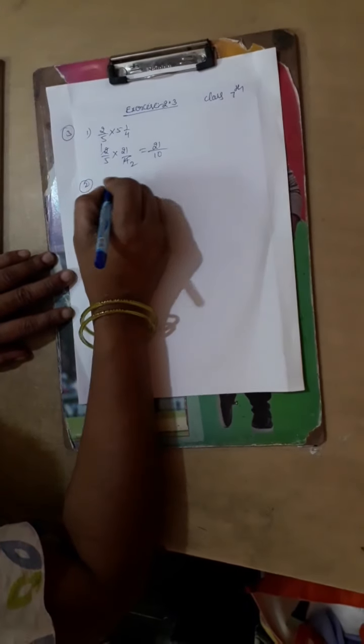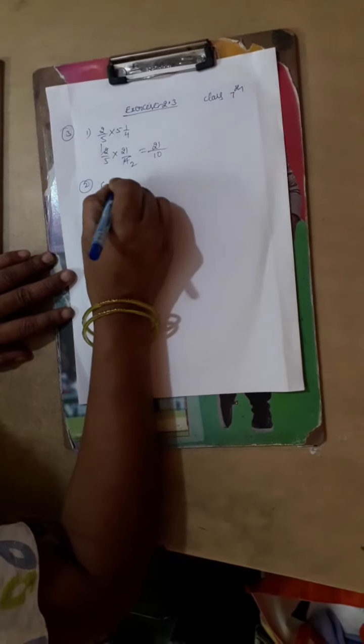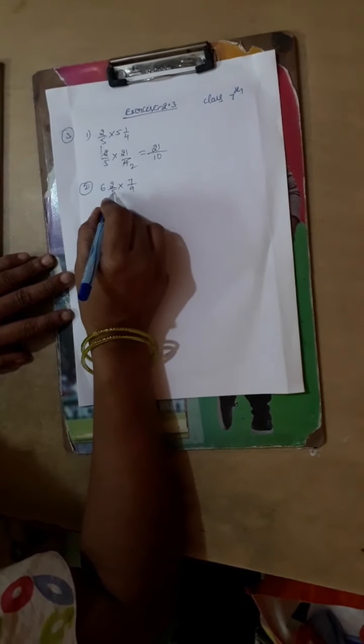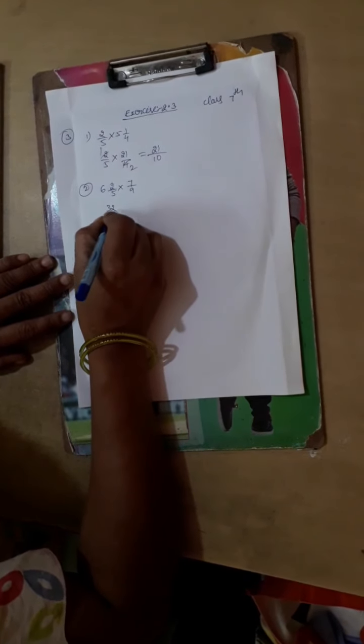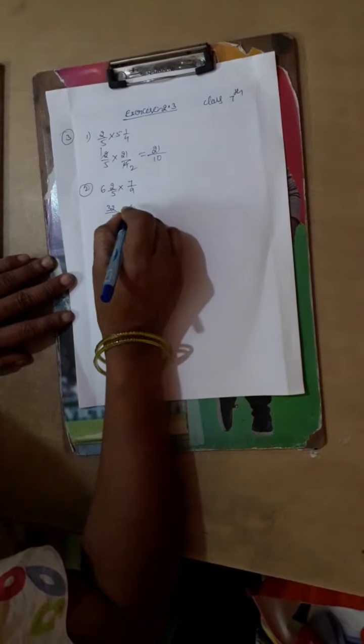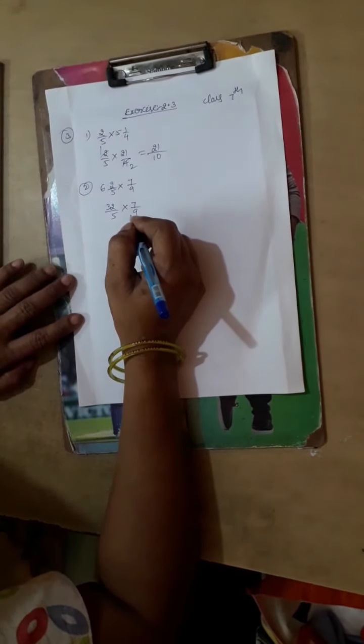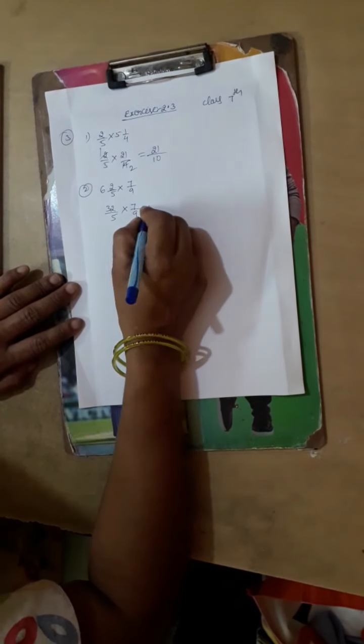Then second problem: 6 2 by 5 into 7 by 9. So let us multiply. 6 times 5 is 30, 30 plus 2 is 32, divided by 5 into 7 by 9. So here you cannot cancel each other. So then you can multiply simply.